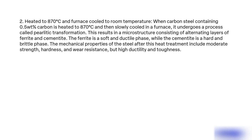2. Heated to 870°C and furnace cooled to room temperature. When carbon steel containing 0.5% carbon is heated to 870°C and then slowly cooled in a furnace, it undergoes a process called pearlitic transformation. This results in a microstructure consisting of alternating layers of ferrite and cementite. The ferrite is a soft and ductile phase, while the cementite is a hard and brittle phase.